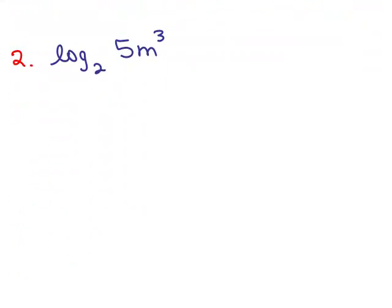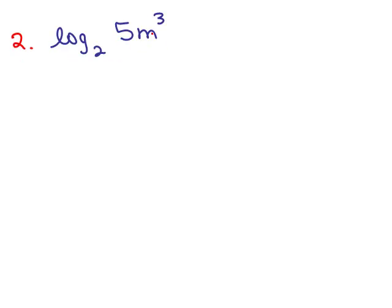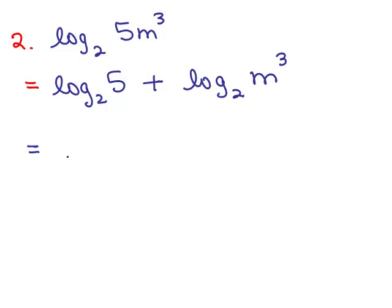So I've got the log base 2 of 5m cubed. I do have something cubed but the overriding thing is first I have a multiplication. 5 is not to the 3rd power. That's really 5 to the 1st power. So it's 5 times m cubed. So the first thing I need to do is use the product property. So I have the log base 2 of 5 plus the log base 2 of m cubed.